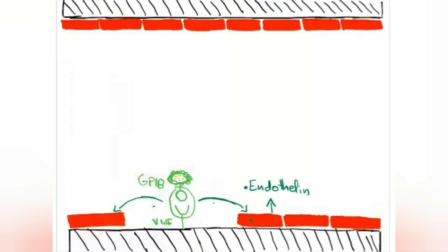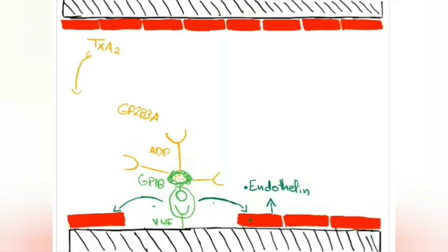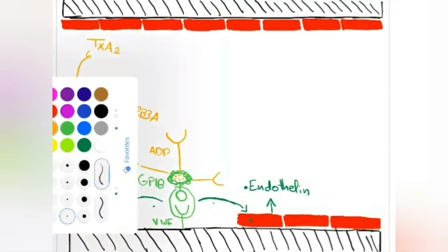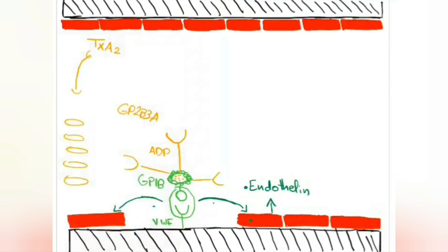These granules contain ADP and thromboxane. ADP stimulates the expression of a receptor called GP2b3a. Thromboxane, on the other hand, is going to attract more platelets to the site of injury. This takes us to step number four, aggregation, where the platelets aggregate and stick together.